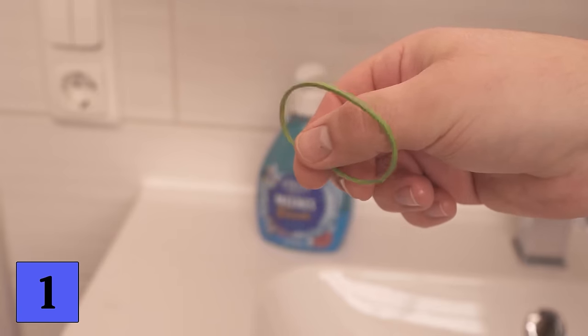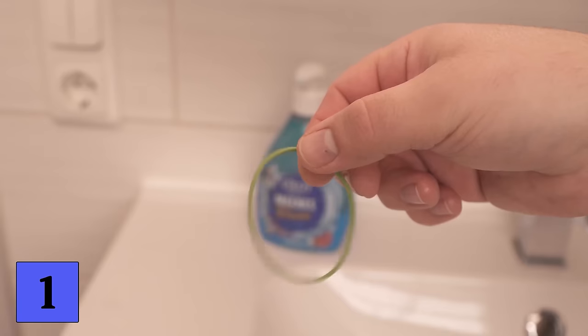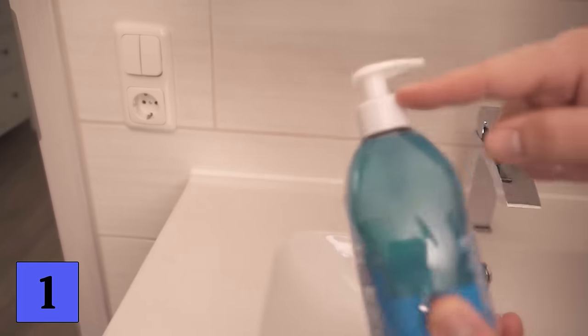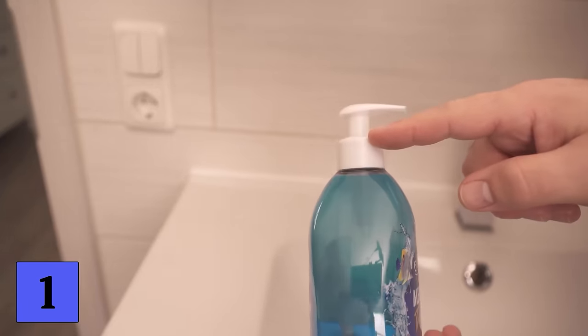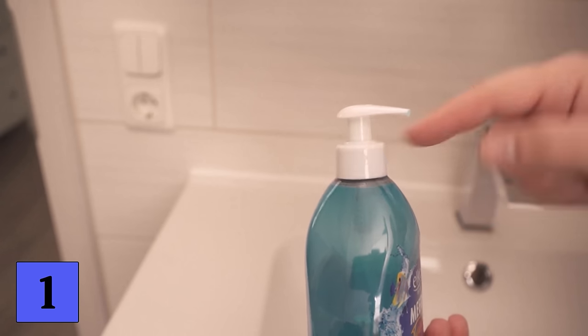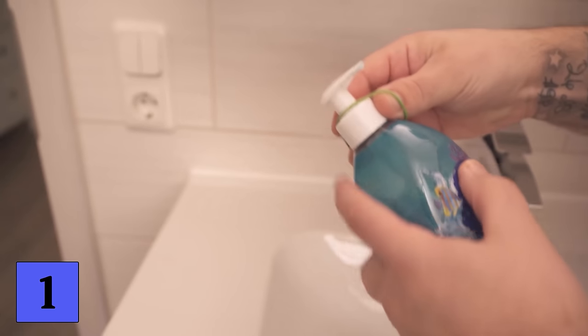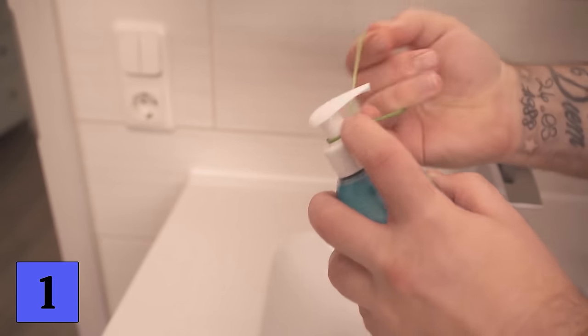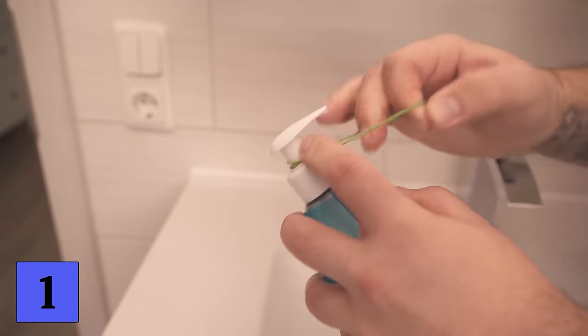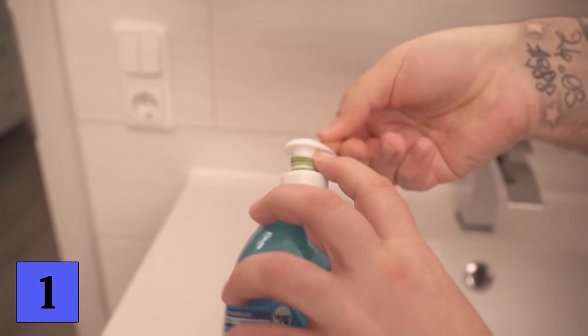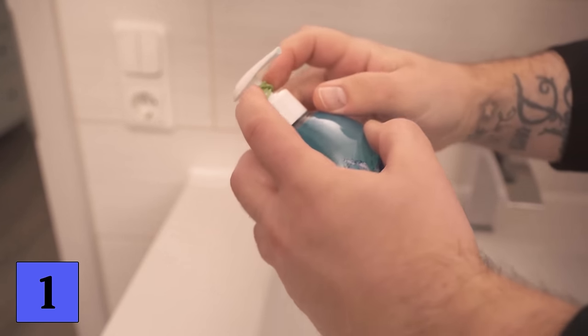You can now take this and wrap it around the head of the soap dispenser. When you press down on the soap dispenser, the soap is pumped upwards. With the rubber band we blocked the way a little bit so that you can't push the soap dispenser down as far. Of course you can also just make sure that you don't push it down so far, but that's not always so easy and so the rubber band can really help here.